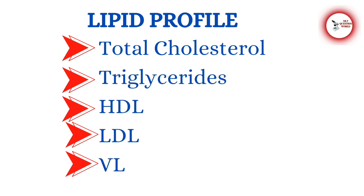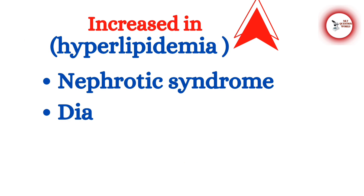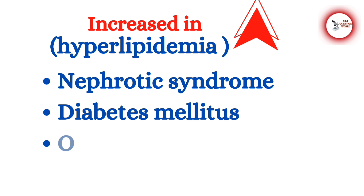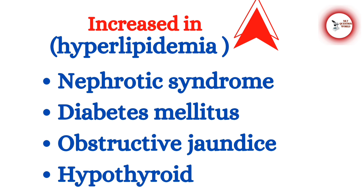The lipid profile or lipid panel test includes total cholesterol, triglycerides, HDL, LDL, and VLDL. The first parameter is cholesterol — serum cholesterol rises with age, and the rise is more marked in men than in women. An increased level of cholesterol in the blood is called hyperlipidemia, and it is seen in nephrotic syndrome, diabetes mellitus, obstructive jaundice, and hypothyroidism.